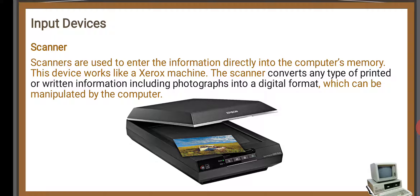The first one is the scanner. Scanners are used to enter information directly into computer memory. We can use the scanner machine to scan images or any data or information and save it to computer memory. It works like a Xerox machine — the scanner converts any type of printed or written information, including photographs, into digital format which can be processed by the computer.